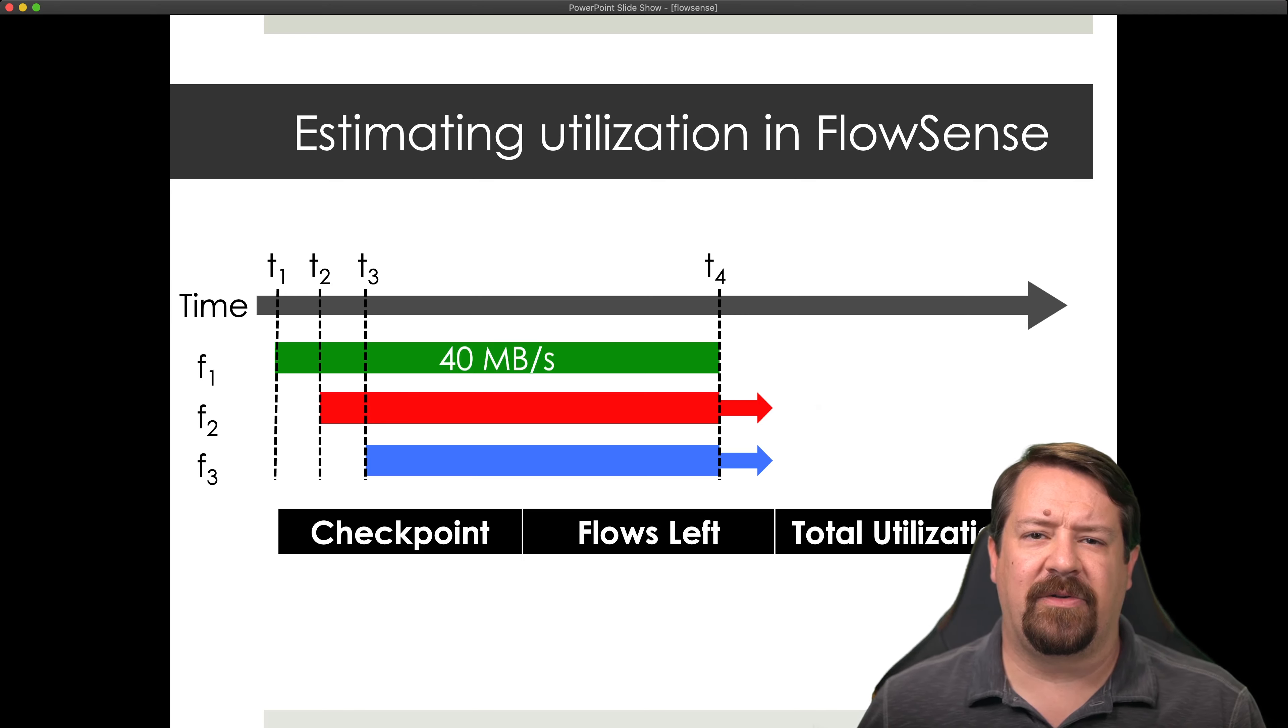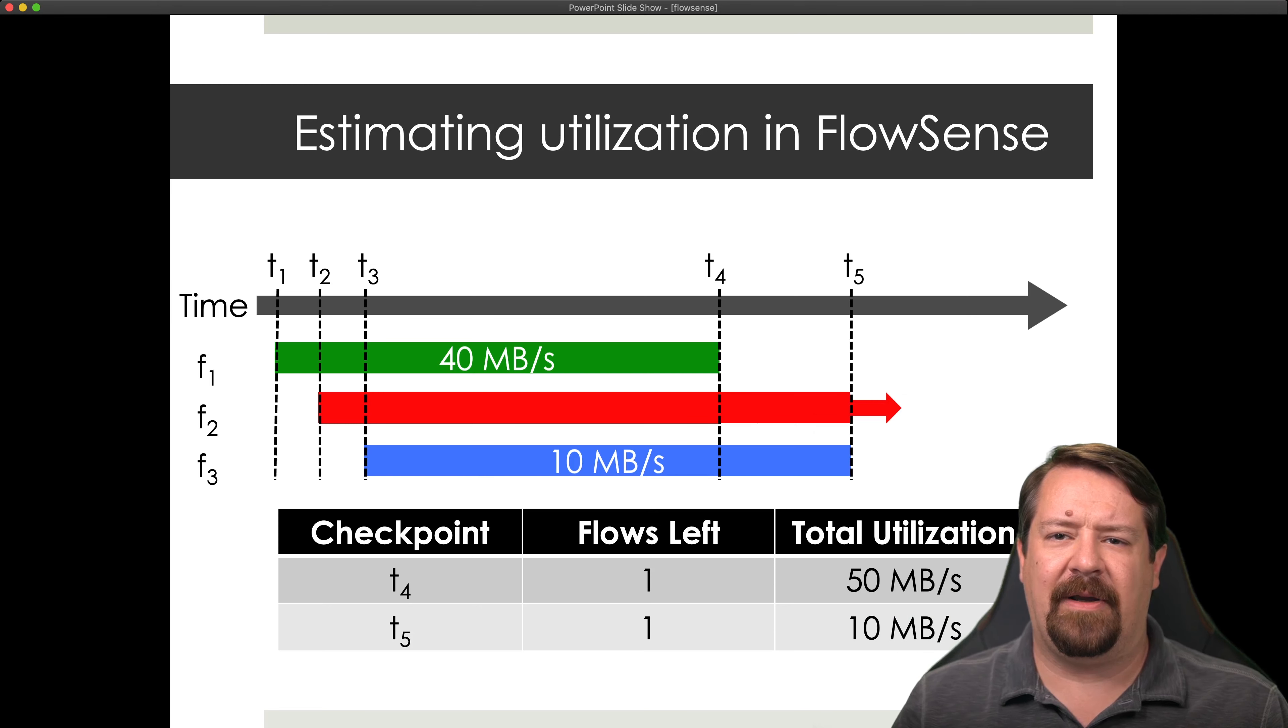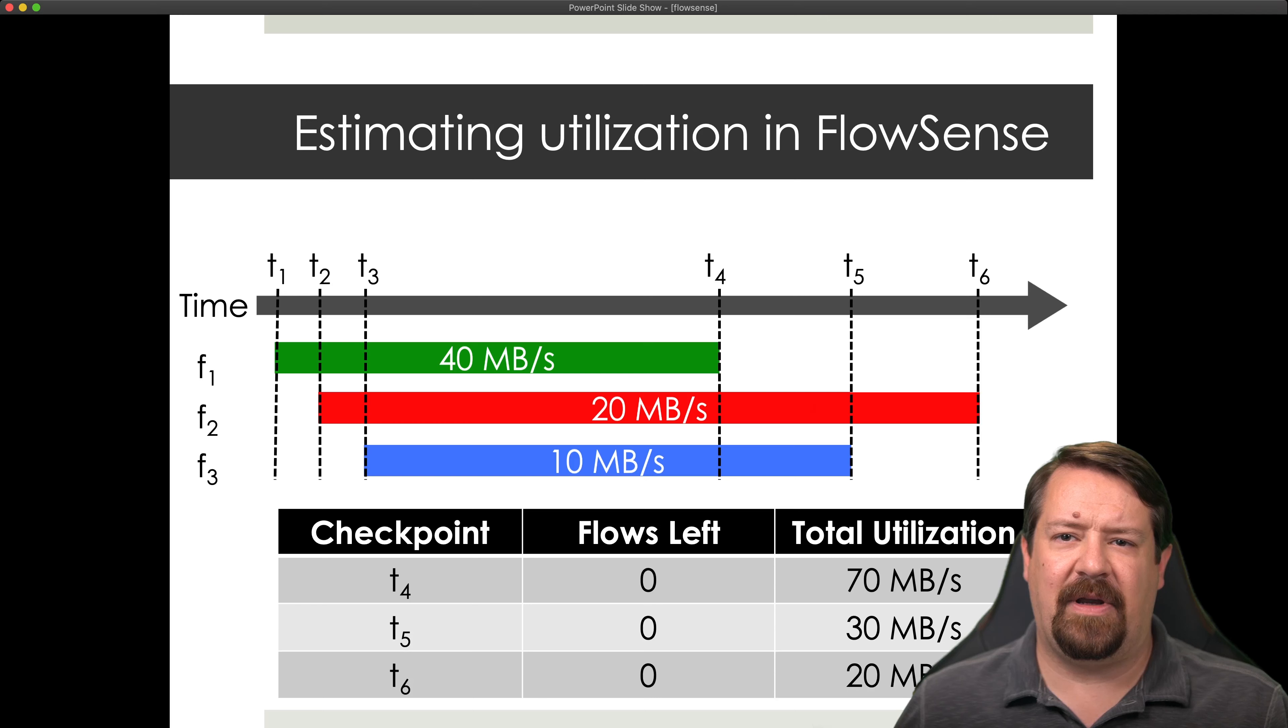Remember, it doesn't get statistics until the flow expires. So it doesn't know how much bandwidth is being consumed by flow two and flow three at this time. It only knows the average consumed by flow one. So then at a later point in time, flow three ends and the controller gets the statistics on that at T5. And now it can create a new checkpoint and update the utilization. So now after the fact, it knows that 50 megabytes per second were in use at T4. Then when flow two expires, it is able to improve its estimate even further. So at checkpoint T6, it knows that there's no flows left because all of the flows that were in operation during that time have expired and it's collected the statistics. And so now it can update the utilization estimates for T4, T5, and T6 and further improve the accuracy of its estimate.